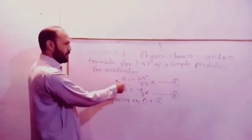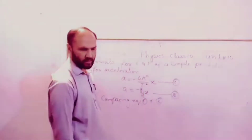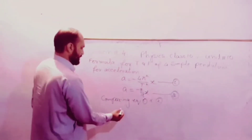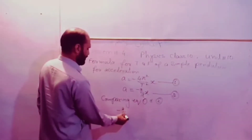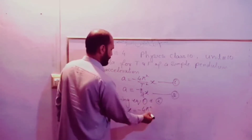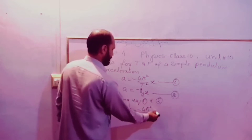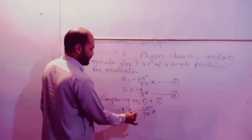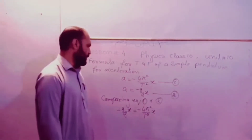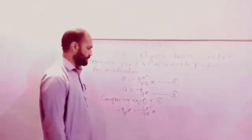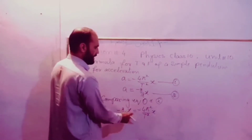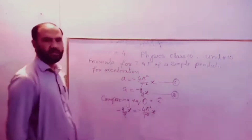The right-hand side equals the left-hand side. The right-hand side is equal to minus omega squared times x, which equals minus 4 pi squared over T squared times x. When the negative signs cancel, the factor remains.